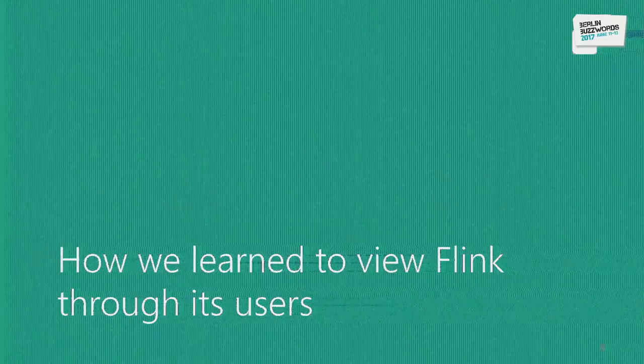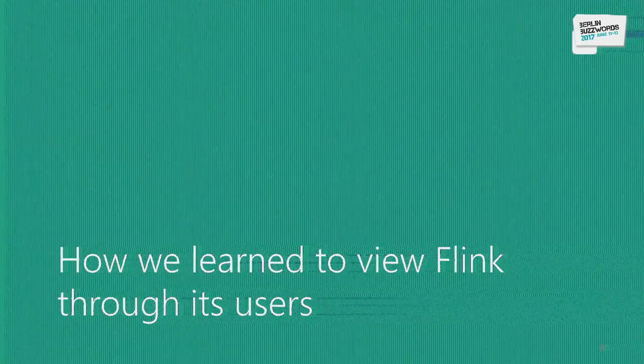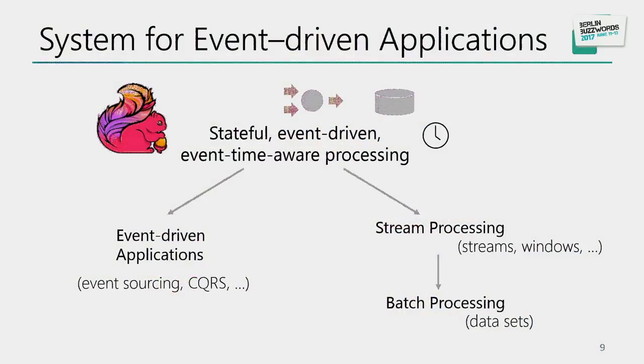What have we learned about how users actually view Flink? We tried to listen to users describe it back to us. Many described it as a system for generic stateful event-driven processing — a building block for implementing stateful services and stateful microservices. It reacts to events, maintains application state, triggers other actions, and is responsible for maintaining consistency, durability, and persistence of that application state — without a separate database.